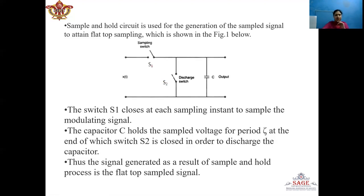The sample-and-hold circuit is used for the generation of the flat top sample signal. It contains two switches: S1, the sampling switch, and S2, the discharge switch, along with a capacitor C across which the flat top sample signal is taken. X(T) is the message signal. Switch S1 closes at each sampling instant, charging capacitor C to the voltage X(T). S1 then opens and the capacitor holds this voltage for period tau, after which S2 closes to discharge the capacitor. The discharging time is very small because the forward resistance of S2 is very low.